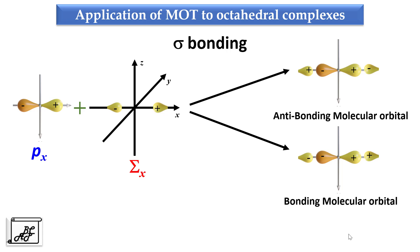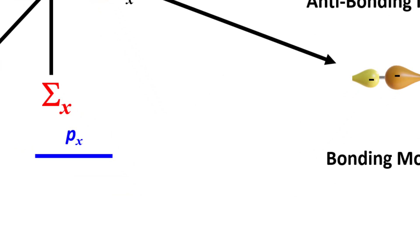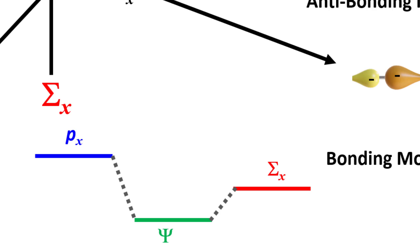Diagrammatically, we can draw this using molecular orbital theory. On the left-hand side is the atomic orbital px, and on the right-hand side are the ligand group orbitals. The ligands are more electronegative, therefore they are at lower energy. These two overlap to form two molecular orbitals: a bonding molecular orbital with low energy and high stability, and an anti-bonding molecular orbital with high energy and low stability.